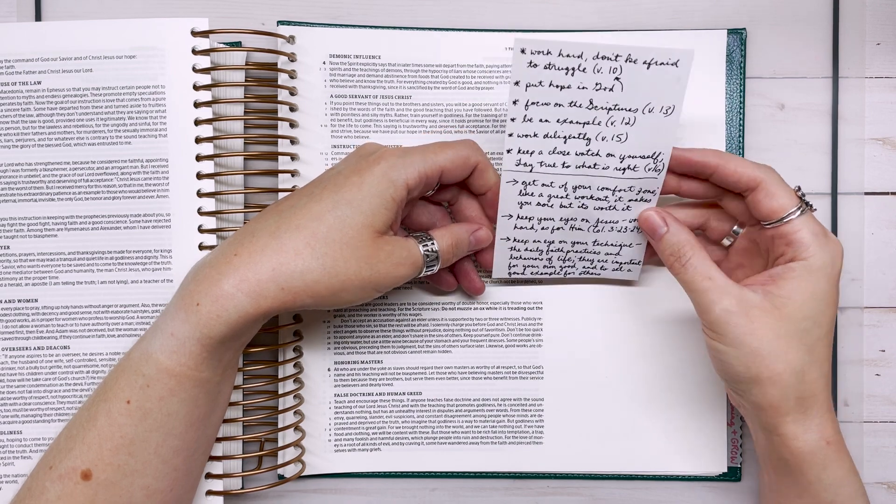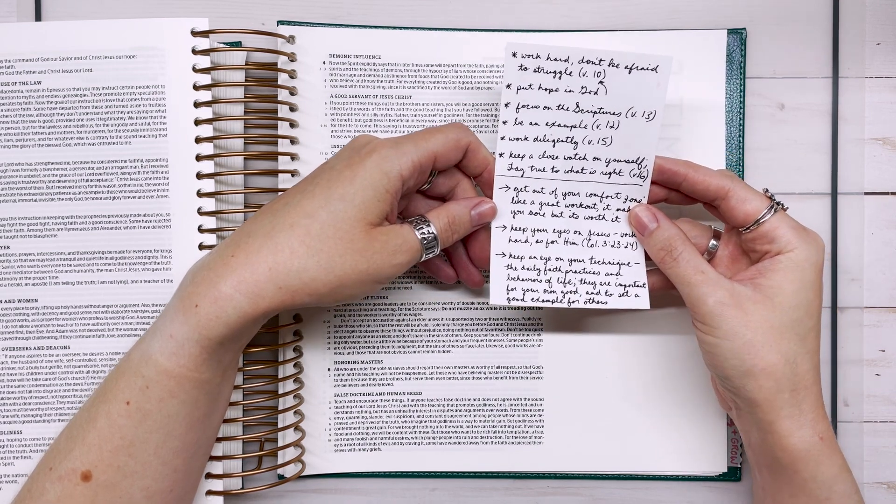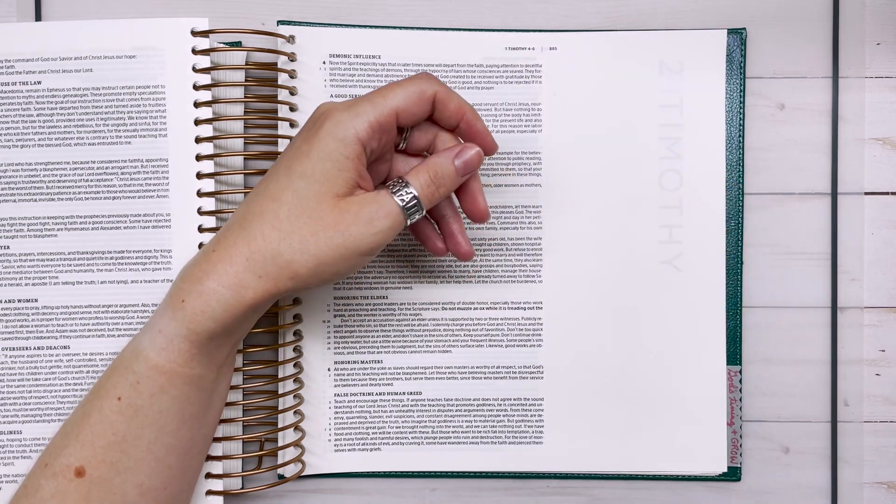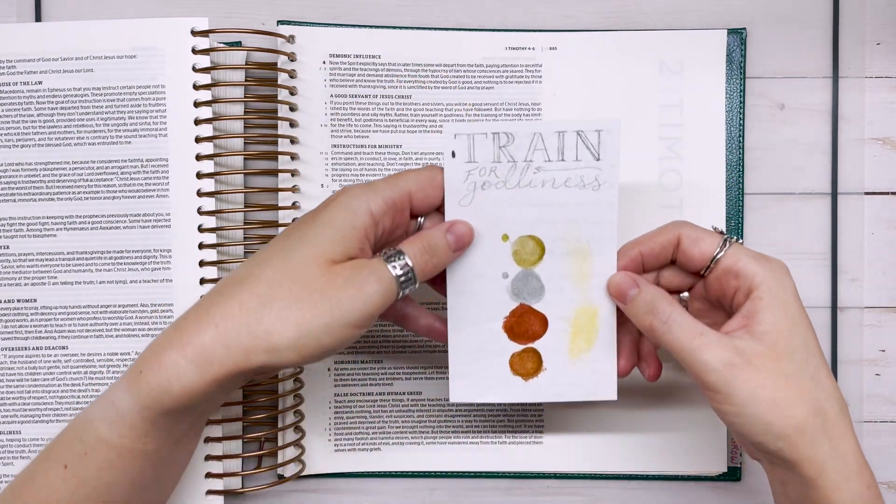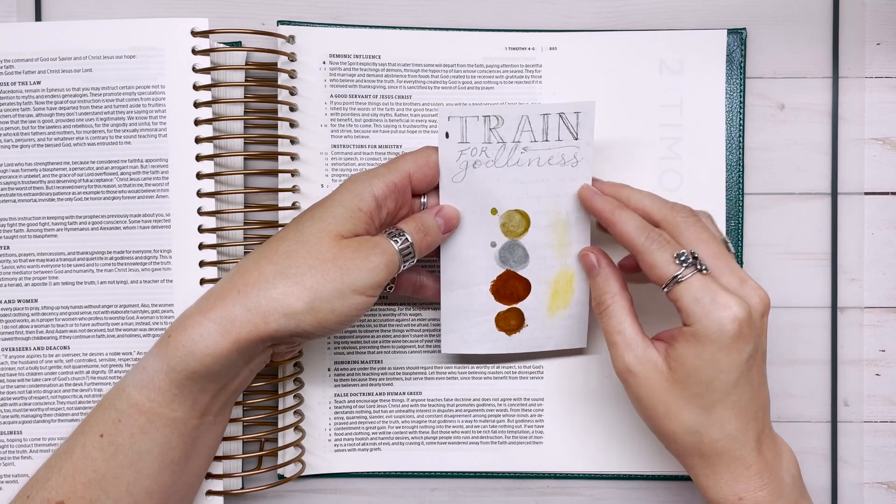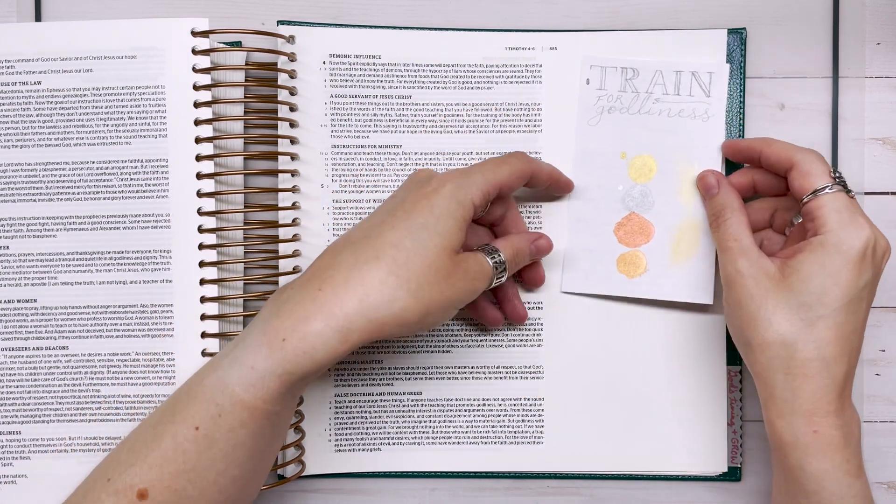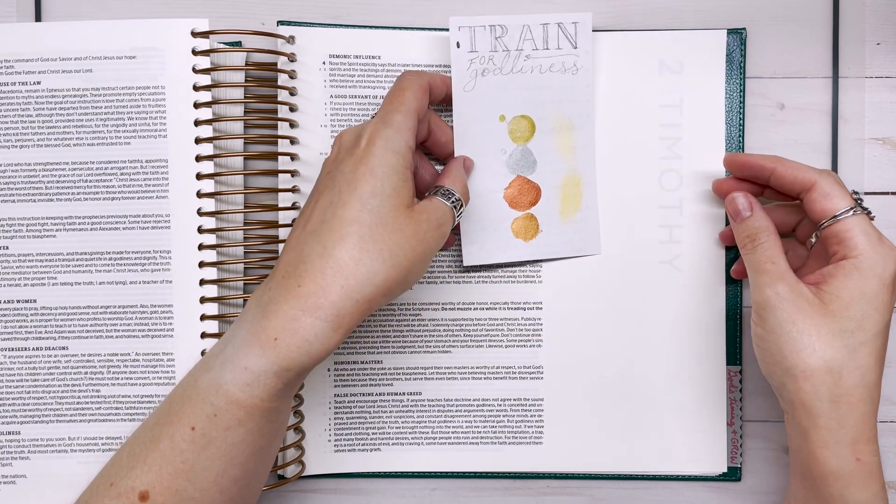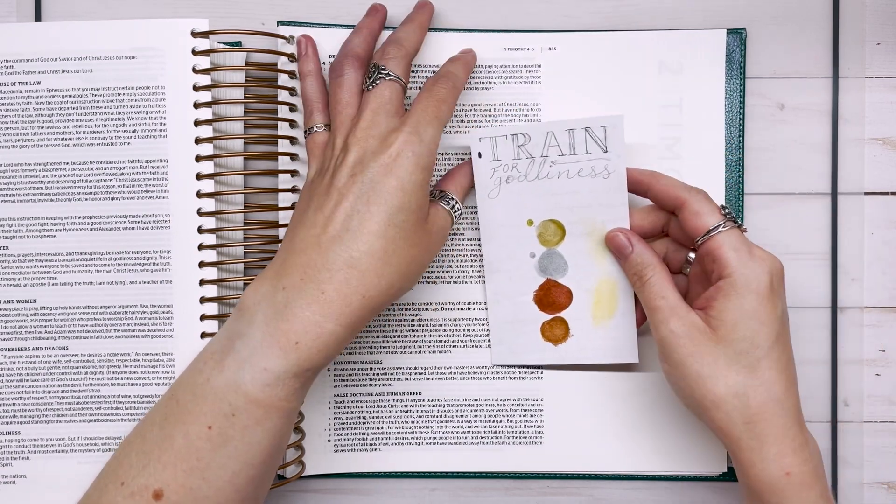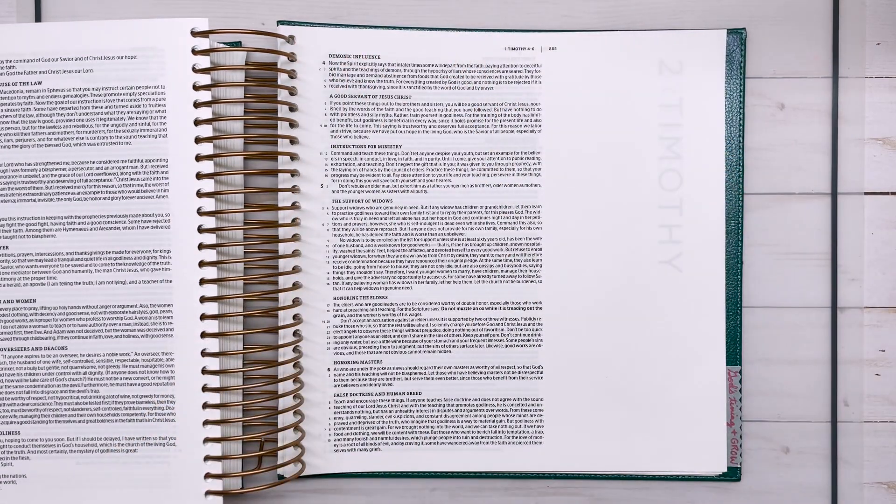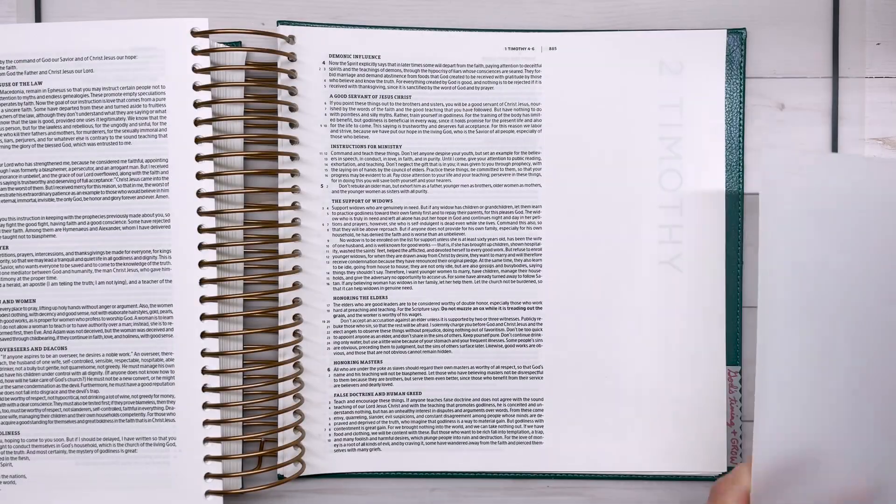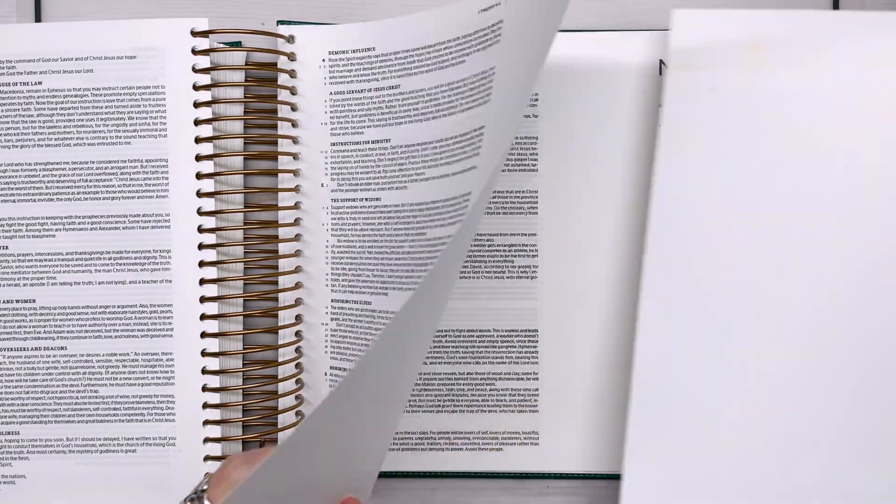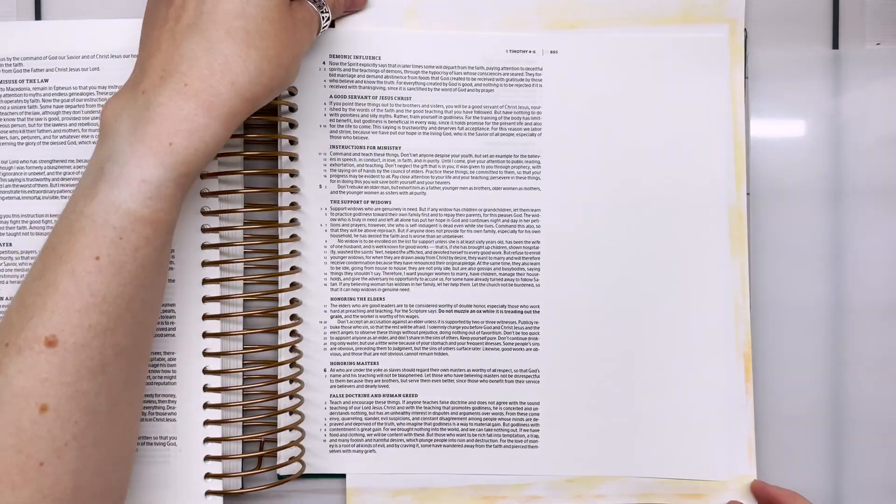So that's kind of my key takeaways from this passage, and those are the things that I'm going to be wanting to write down in my journaling. So I made this hand-lettered sketch that just says train for godliness. And then I picked out the color palette that I wanted to use. You can always pick out different colors, but these are gold and silver and bronze and represent striving for something higher.